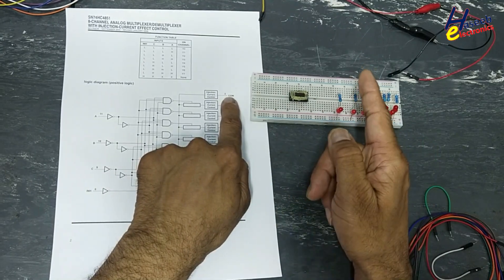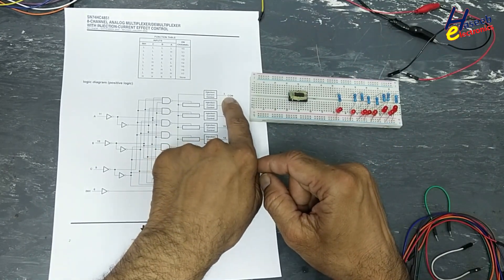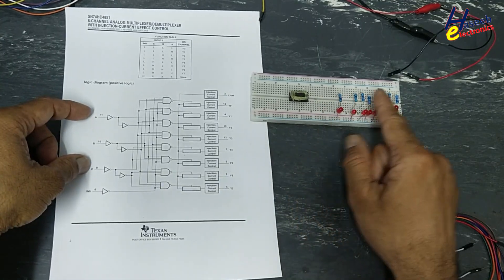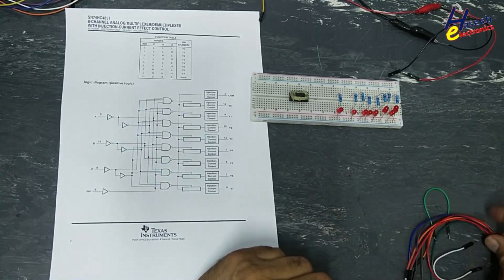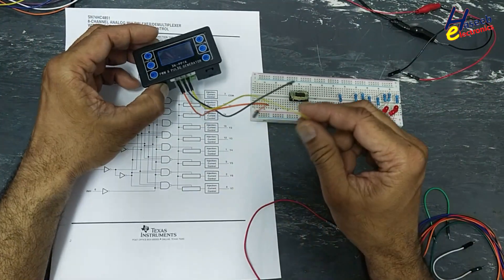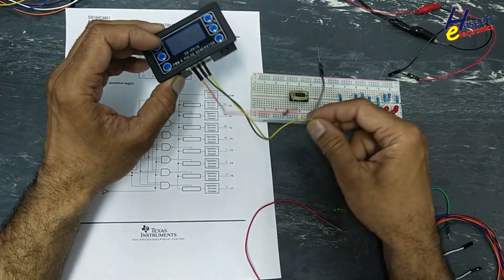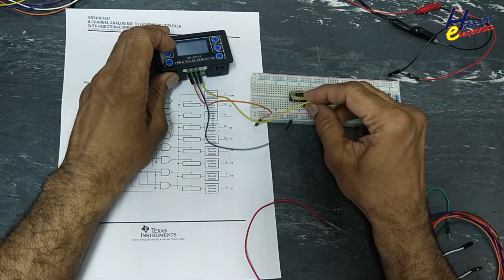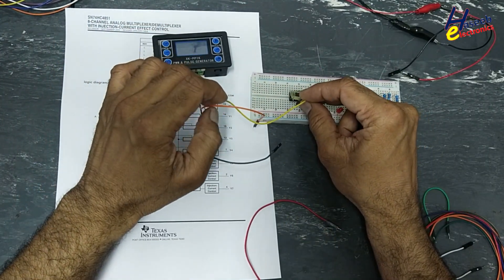First, we will see the demultiplexer. We will inject a signal at pin number three and we will select addresses of these registers and send that signal on the output. I will use a PWM signal to indicate on LEDs. Pin number three.